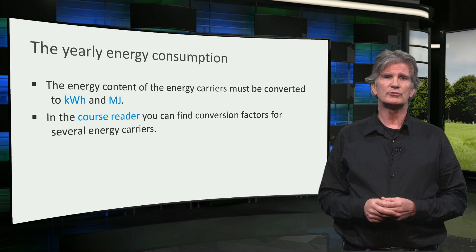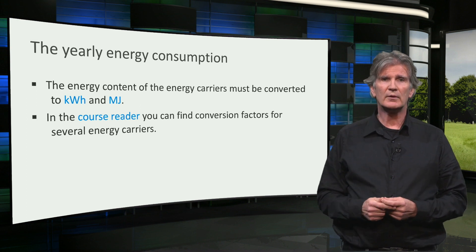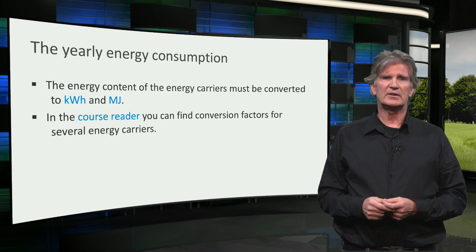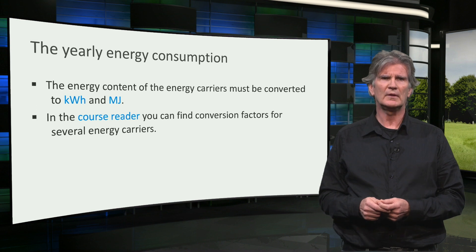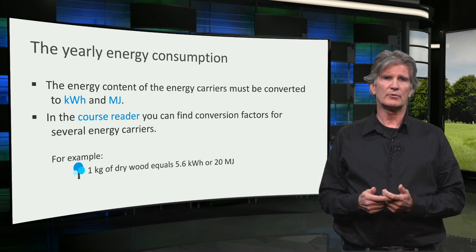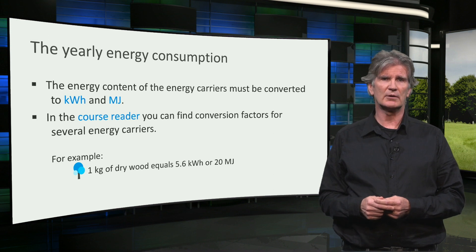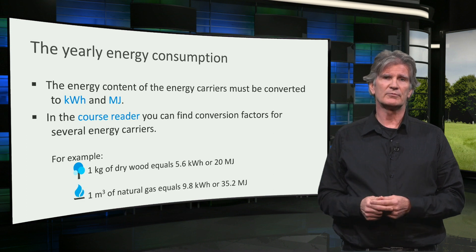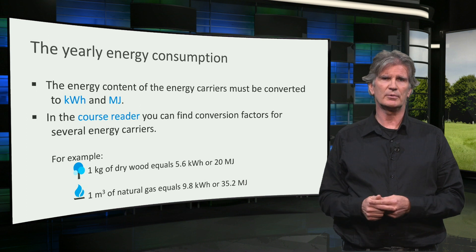When you have the data on the energy use of your building, it should be made comparable. Therefore, the energy content of the energy carriers must be converted to kilowatt hours and megajoules. In the course documents for this week, you can find conversion factors for several energy carriers. For example, one kilogram of dry wood equals 5.6 kilowatt hours or 20 megajoules, and one cubic meter of natural gas equals 9.8 kilowatt hours or 35.2 megajoules.